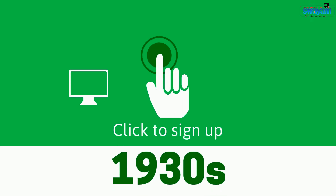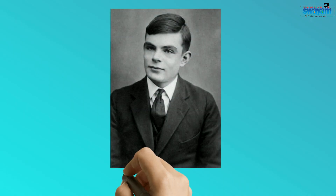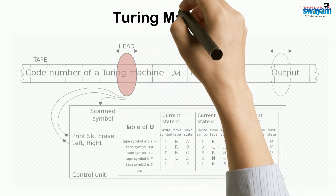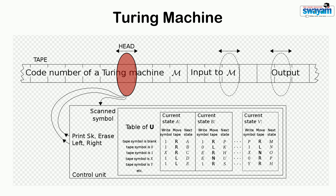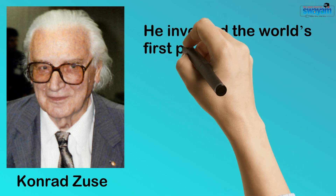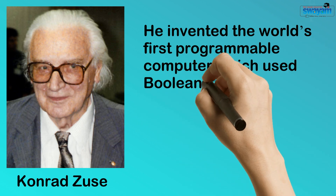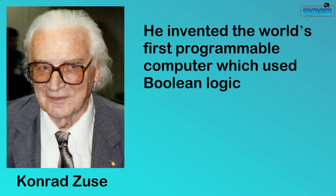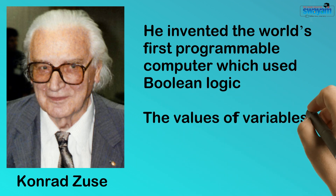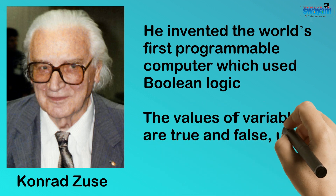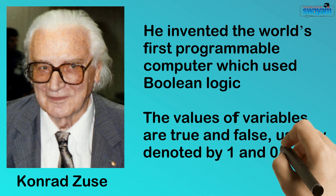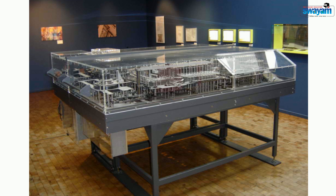1930s. British scientist Alan Turing introduced the Turing machine in 1936. This machine was earlier called the Universal Machine as it was capable of calculating anything. In the same year, German engineer Konrad Zuse invented the world's first programmable computer which used Boolean logic. In mathematics, Boolean algebra is a branch of algebra in which the values of the variable are the truth values, true and false, usually denoted by 1 and 0. This is the Zuse Z1 replica in the German Museum of Technology in Berlin.